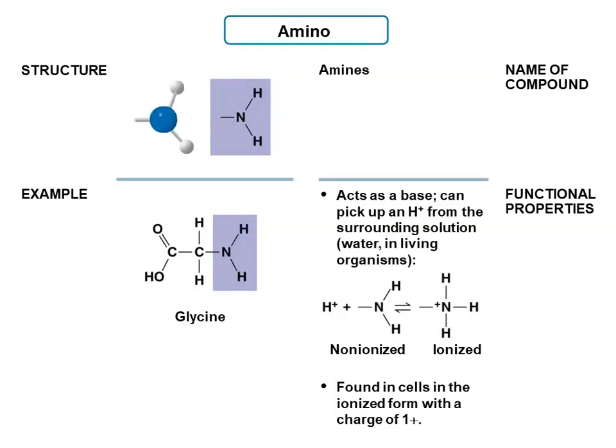The amino group works in the opposite direction — it is a nitrogen bonded to hydrogen atoms. Amino groups are also part of amino acids. Nitrogen, being electronegative, is more than willing to pick up an extra proton, so it can act as a base. It can take a proton from water and produce NH3+. That is the form we find it in cells — with that positive charge.